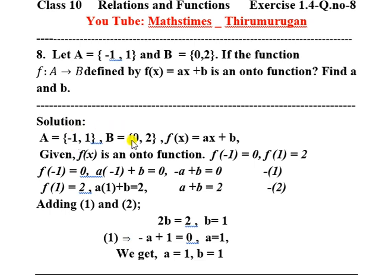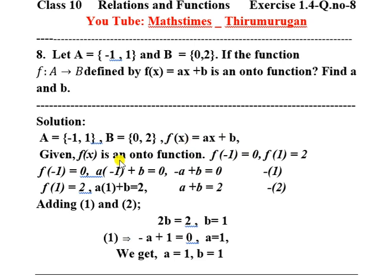So f(-1) = 0 and f(1) = 2. That is, every element in B — 0 and 2 — has a pre-image in A. We can see that f(-1) = 0 and f(1) = 2.